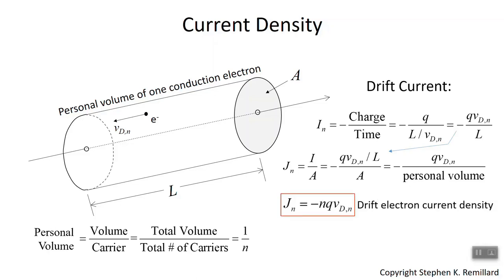The current density of electrons is minus the carrier concentration of electrons times q times the drift velocity of electrons. Remember, current density is current per unit area, not per unit volume.